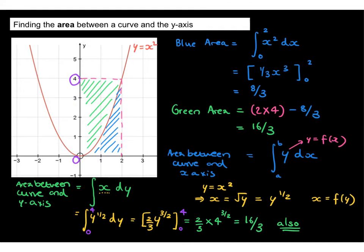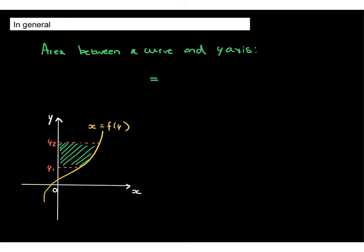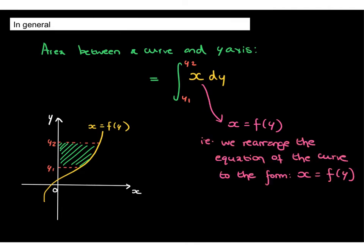We get the same result just by changing the way we do the integral. To generalise: the area between a curve and the y-axis is equal to the integral of x with respect to y between limits y₁ and y₂. It's important to understand that x must be expressed as a function of y — rearrange the equation of the curve into the format x equals f(y). The limits must also be in terms of y, i.e. y values on the y-axis.